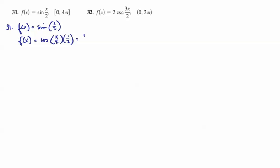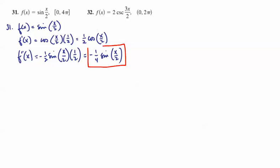The second derivative would be 1 half. The derivative of cosine is negative sine. We leave the inside alone, times the derivative of the inside. When we simplify, we end up with negative 1 fourth sine of x over 2. That is our second derivative.